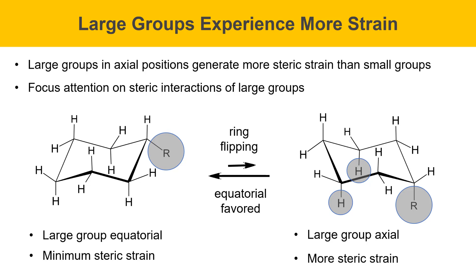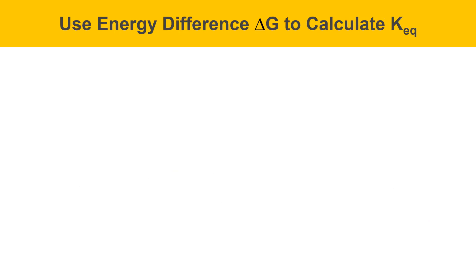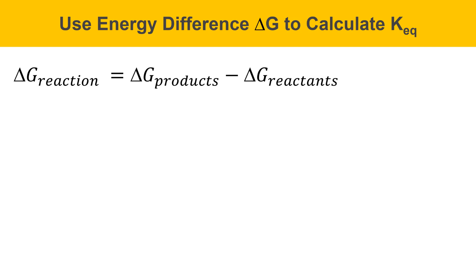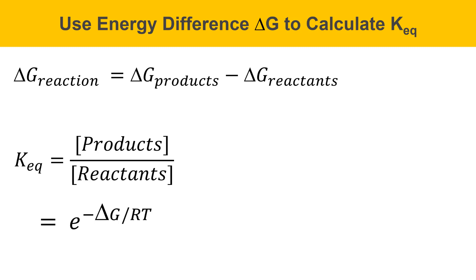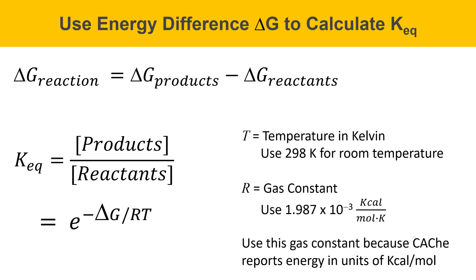We're going to look at several substituted cyclohexane examples and use energy differences — delta G — to calculate equilibrium constants, Keq, for pairs of conformations. Delta G of the reaction equals the energy of the products minus the energy of the reactant. We'll use the CASH program to calculate the energies of both conformations and subtract to get delta G. Then we use two equations: Keq equals concentration of products over concentration of reactants, which also equals e to the minus delta G divided by RT. T is temperature in Kelvin — use 298 K for room temperature. R is the gas constant: 1.987 × 10⁻³ kilocalories per mole per degree Kelvin, since CASH reports energy in kilocalories per mole. Using this gas constant, the units cancel and Keq is unitless.